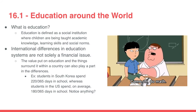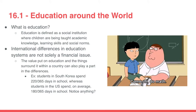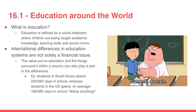What is education? Education is defined as a social institution where children are being taught academic knowledge, learning skills, and social norms. International differences in education systems are not solely a financial issue. The value put on education within a country can also play a part in differences. For example, students in South Korea spend 220 out of 365 days in school, whereas students in the U.S. spend on average 180 out of 365 days in school.